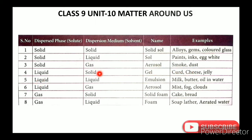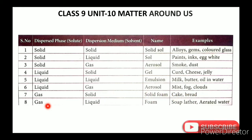Liquid in solid is called gel — examples are curd, cheese, and jelly. Liquid in liquid is called emulsion — examples are milk, butter, oil, and water. Liquid in gas is called aerosol — examples are mist, fog, and clouds. Gas in solid is called solid foam — examples are cake and bread. Gas in liquid is called foam — examples are soap, leather, and aerated water.